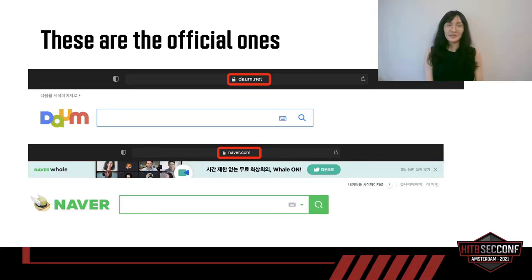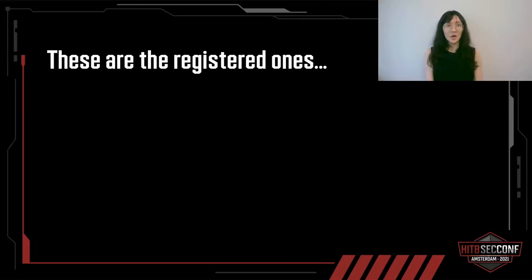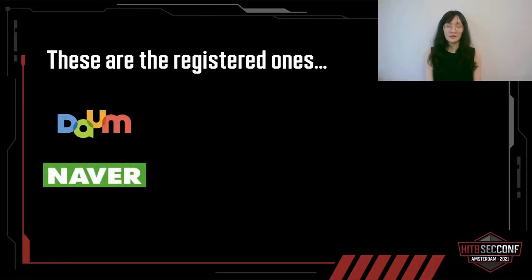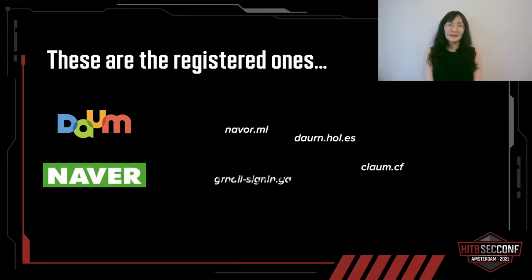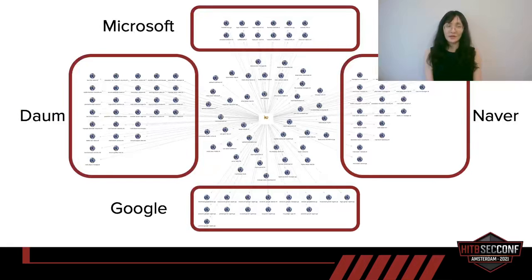Taking a deeper look at the domain names — since not all of you are from South Korea and may not be familiar with their domains, we have the real spellings on the right. You can see what the actors registered. Instead of Naver, they registered a typosquatted variant. Similarly for Daum and Gmail. There are a lot of domains we can categorize into four groups: Naver, Daum, Microsoft Outlook, and Google.